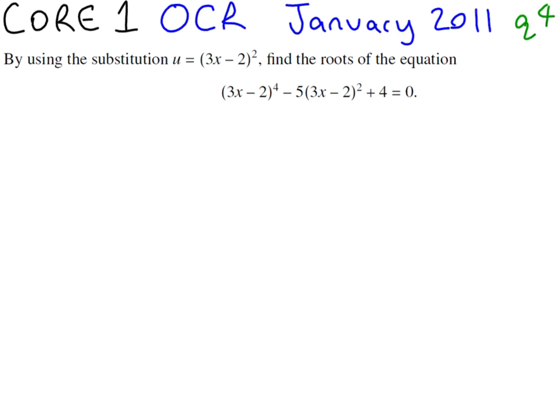So we can see that we're substituting in u equals 3x minus 2 all squared. We can see this quantity here and we can almost see it here. The only difference is we've got a power of 4, but don't worry because a power of 4 can be achieved by squaring and squaring again.